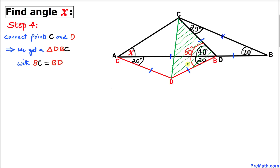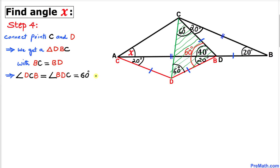We now have triangle DBC where two sides are equal in length, making it isosceles. Since one angle is 60 degrees, the other two angles must each be 60 degrees as well. Therefore, triangle DBC is an equilateral triangle, meaning all three sides are equal.